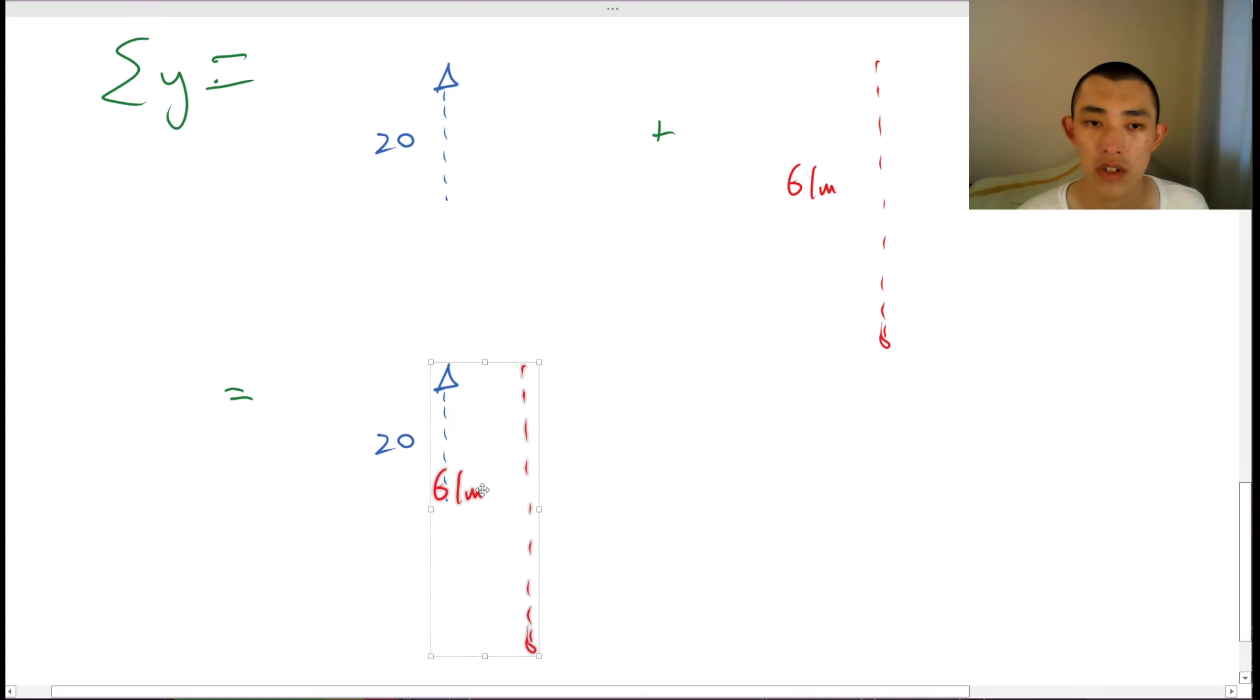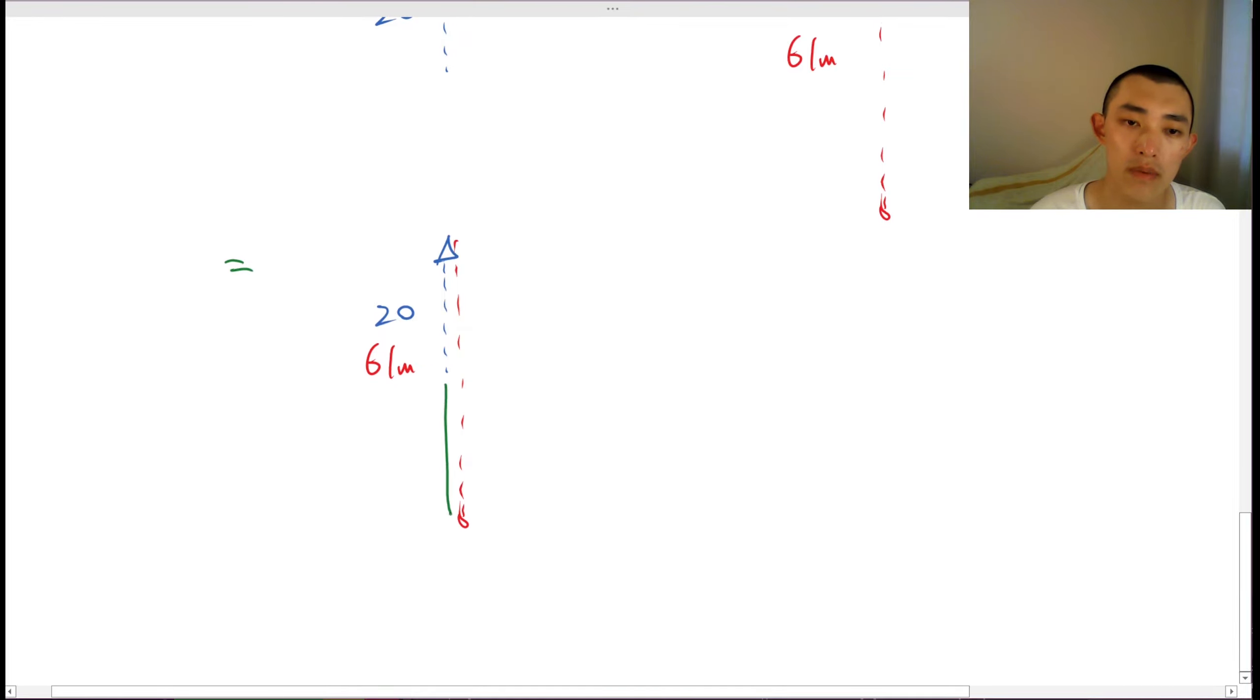And what can we see? We can see that the resultant vector is going to be downwards. Just by 20 is equal to 20 minus 61 is equal to minus 41 meters. It's 41 meters downwards. Great.